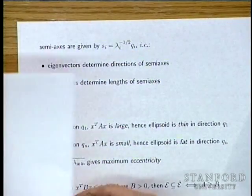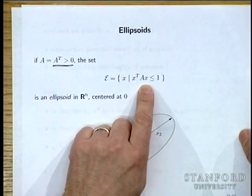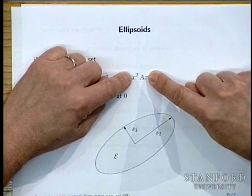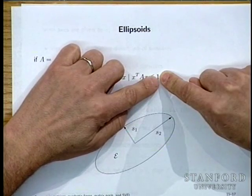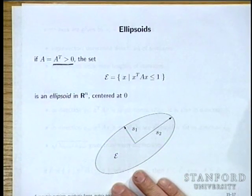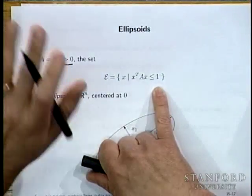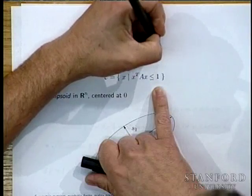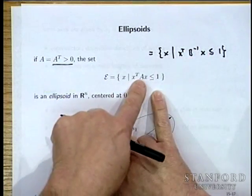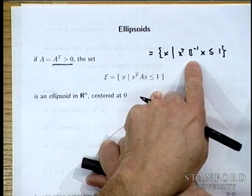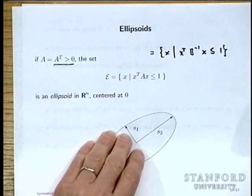Another common form writes the ellipsoid with the inverse: X transpose A^{-1} X < 1, where large eigenvalues correspond to large directions. The quantity sqrt(lambda_max / lambda_min) gives the maximum eccentricity, telling you how non-isotropic the ellipsoid is. The unit ball is fully symmetric; the Earth is nearly spherical but has a small bulge.